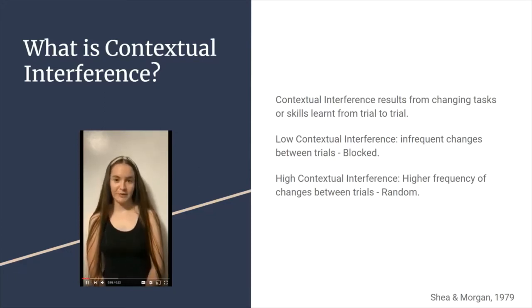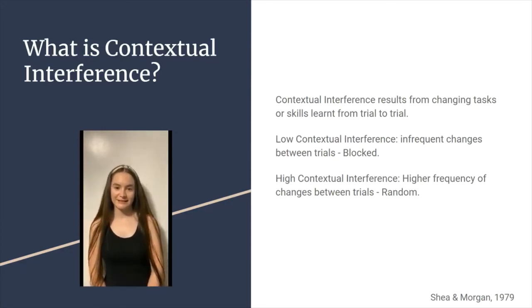When people want to learn a new skill, practicing components of the skill tends to lead to better acquisition. There are several different ways that a person can practice a skill, and one of these is by utilizing contextual interference. Contextual interference results from changing the tasks or skills being practiced from trial to trial. The more frequently the task is changed, the higher the contextual interference.